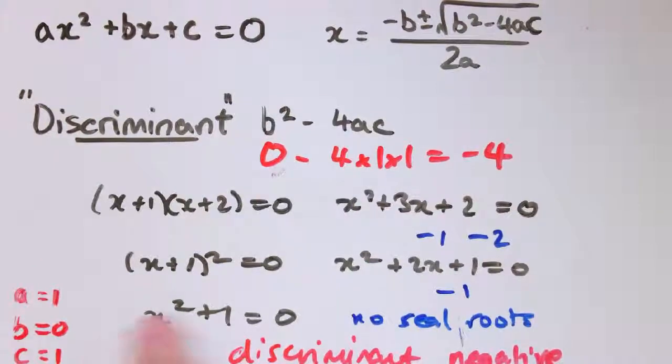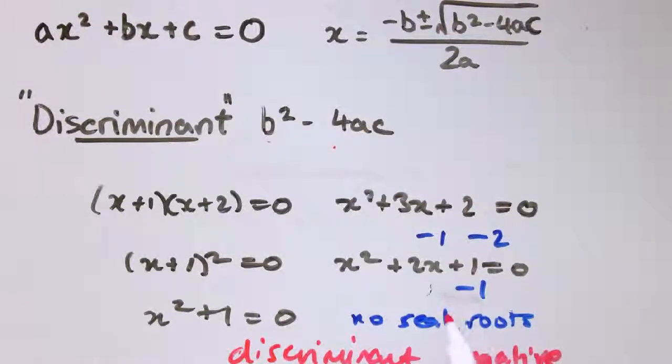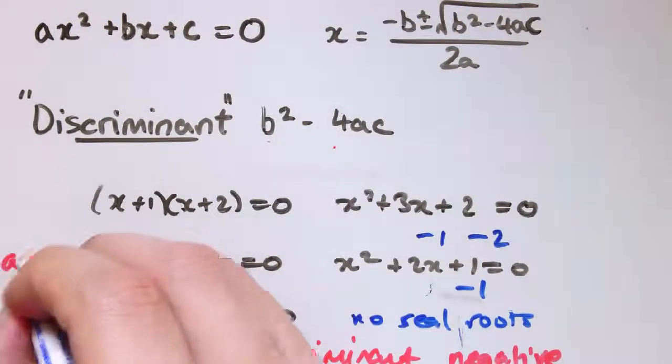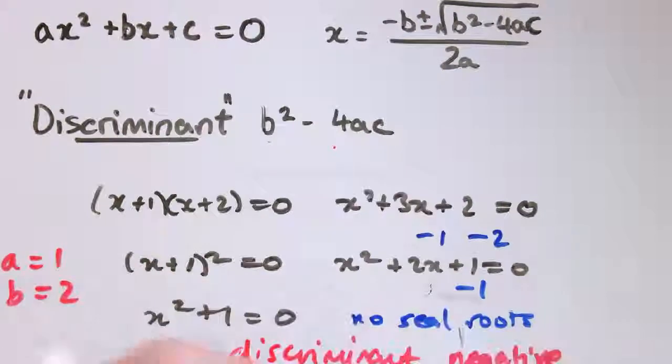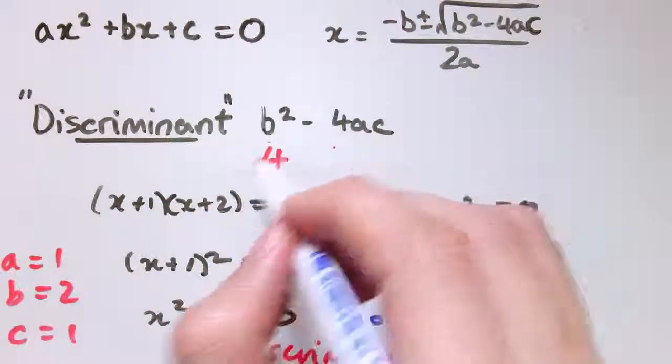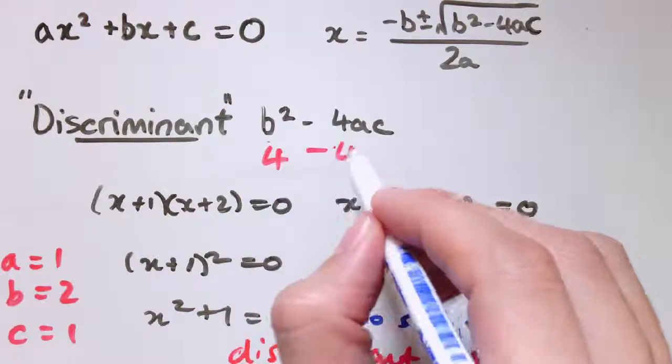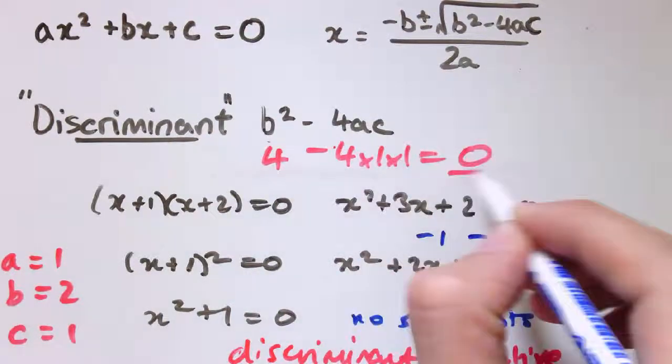Now if we look at the next case up, where we have just one real root, this one that just has the root minus 1, well there we've got a is 1, b is 2, and c is 1. And b squared minus 4ac then is b squared is 4 minus 4 times 1 times 1, that's 0.